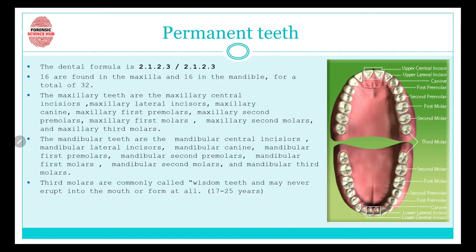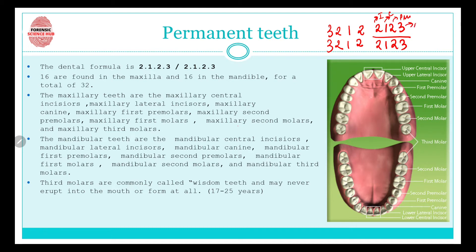Now let's move on to permanent teeth. The dental formula for permanent teeth is 2123 over 2123, and similarly 2123 over 2123. The first number indicates incisors, the second canines, the third premolars, and the fourth molars. So there are eight incisors, four canines, eight premolars, and twelve molars.